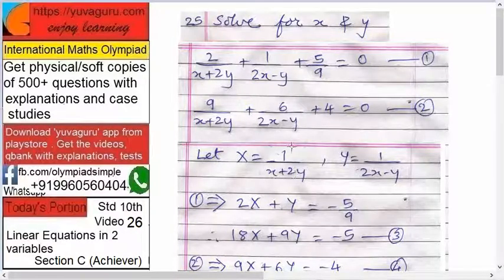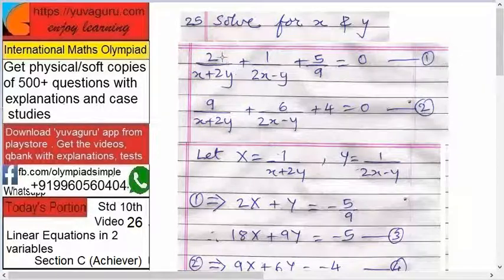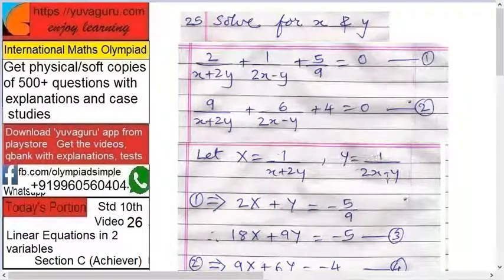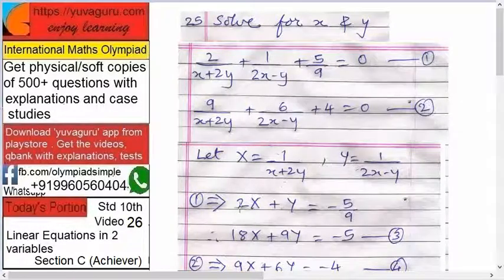x plus 2y. Remember this, 1 upon x plus 2y, because we want everything in numerator. And capital Y equals to 1 upon 2x minus y. So equation 1 becomes what? Therefore equation 1 becomes